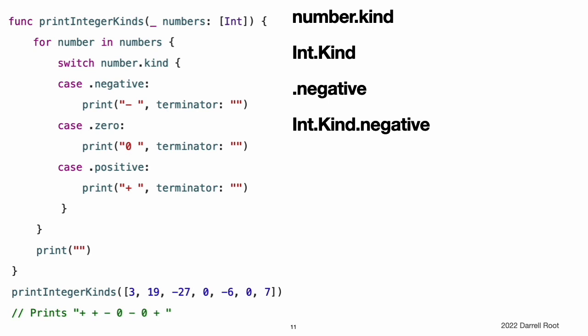This function, print integer kind, takes an input array of integer values and iterates over those values in turn. For each integer in the array, the function returns the kind's computed property for that integer and prints an appropriate description.